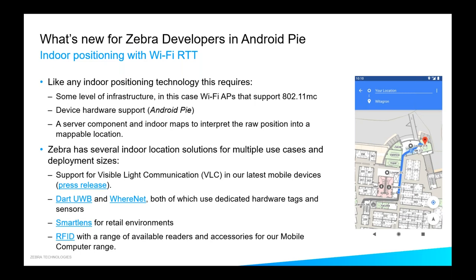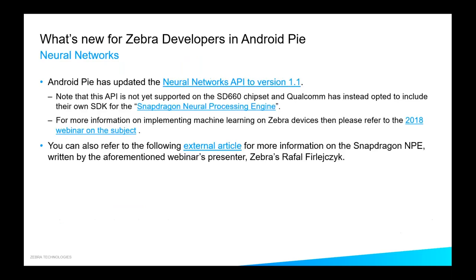If you want to do any kind of indoor location very precisely, our sales engineers would be very happy to go through all of the location solutions and offerings within Zebra. We have Bluetooth solutions, RFID solutions, our smart lens package, and a partnership with Signify — formerly Philips — for visible light communication that also works on our devices. So as far as indoor location is concerned, Zebra has you covered.